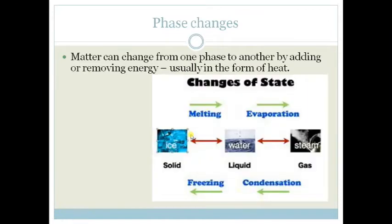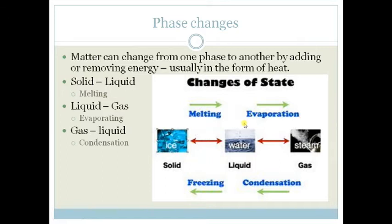Now these changes of state are basically called specific names. So from a solid to a liquid we call it melting. From a liquid to a gas we call it evaporation. But from a gas to a liquid we say that it has condensed. And from a liquid to a solid we call it freezing.